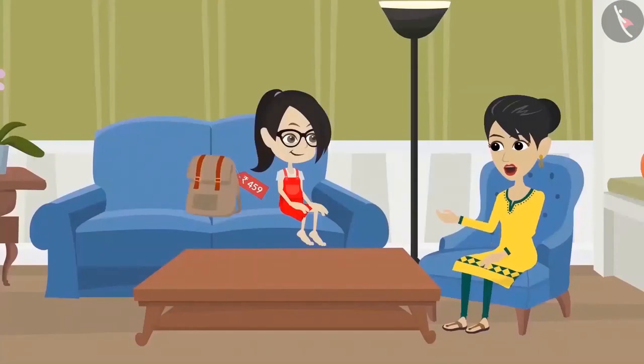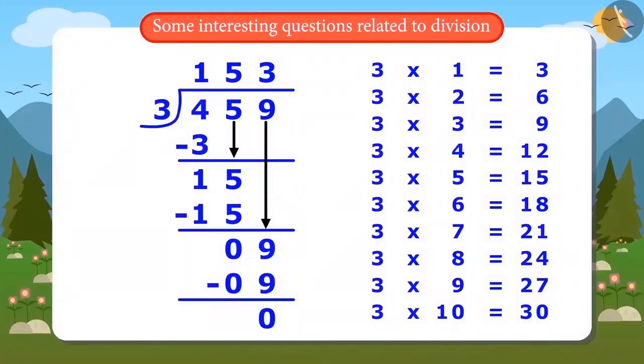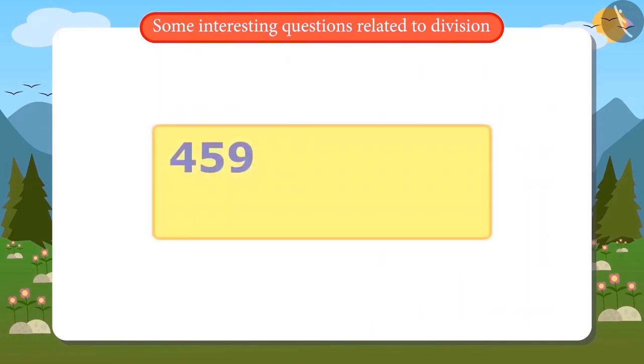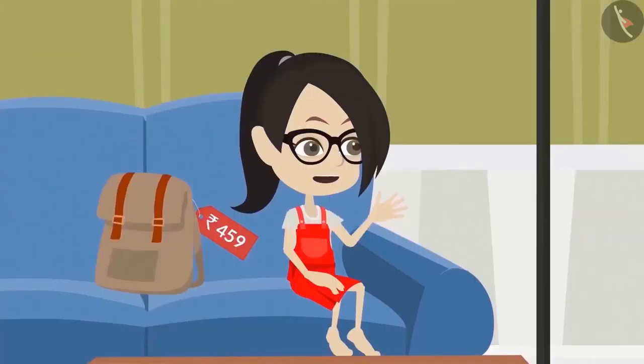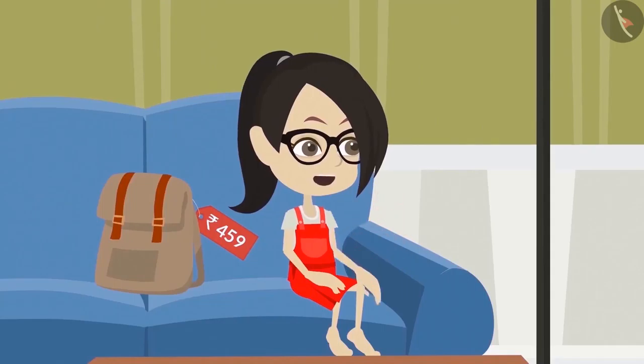You are absolutely right, Vandana. Now look, there is no digit left to divide. So, this means that the whole number is divided by 3, and the answer is 153. That means if we divide 459 into 3 equal parts, one part will have 153. Yes, that means my old bag came for 153 rupees.